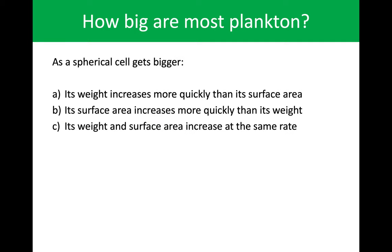Quick question: as a spherical cell gets bigger, what tends to happen? We're thinking about their surface area to volume ratio, which is tied to their mass. As a cell gets bigger, their mass increases very quickly. As weight increases more quickly than its surface area — let me rephrase that. As a sphere gets bigger, its weight increases more quickly than its surface area.